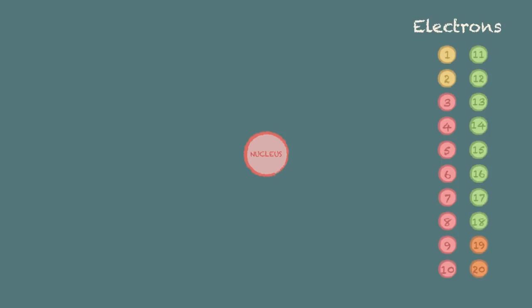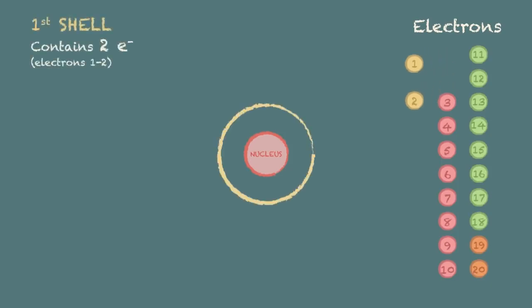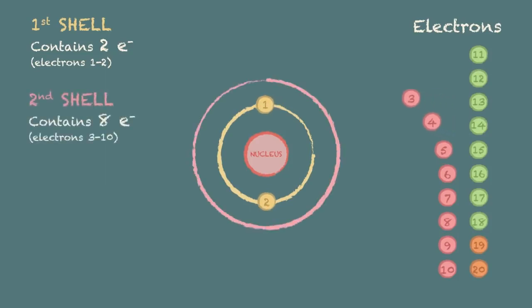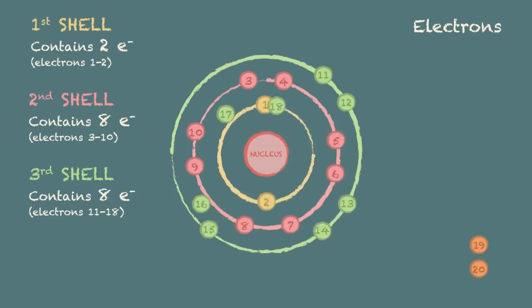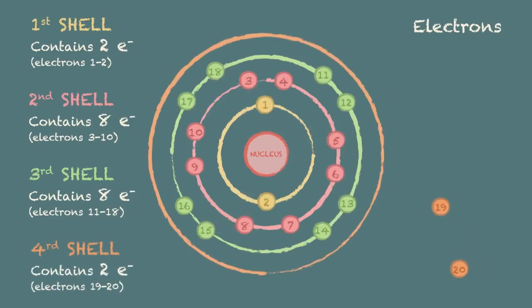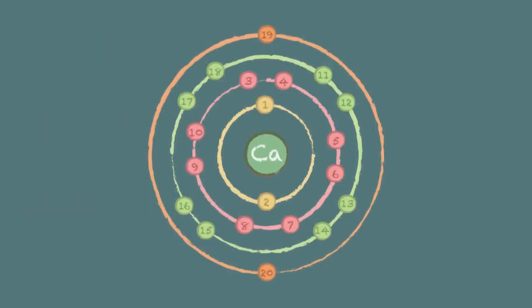The maximum numbers are as follows. The first shell can contain a maximum of 2 electrons. The second shell up to 8 electrons. The third shell also has a maximum of 8 electrons. And the 19th and 20th electrons go into the fourth shell. And this would actually represent a calcium atom.